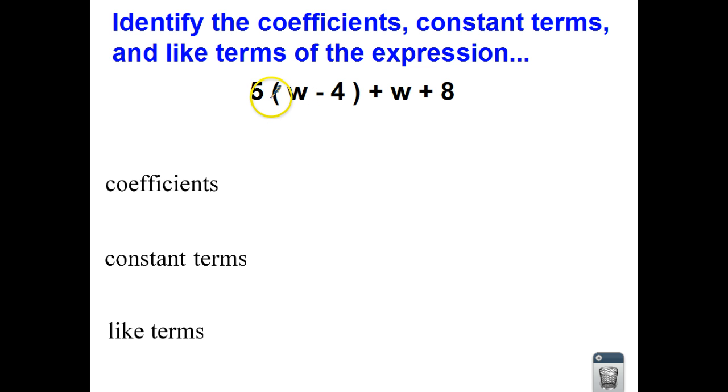I have a 5 that's touching the parentheses. 5 touching the parentheses or grouping symbol means we multiply. So I have 5 multiplied by the quantity of w minus 4. So that means I need to use my distributive property. My distributive property says take the 5 and multiply it by each term on the inside. 5 multiplied by w is 5w. And 5 multiplied by negative 4 is negative 20.